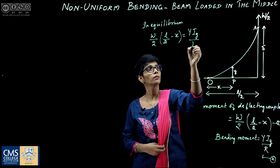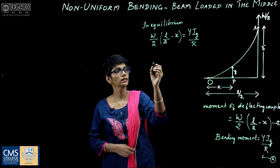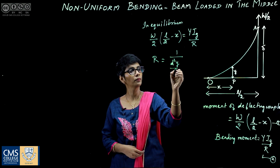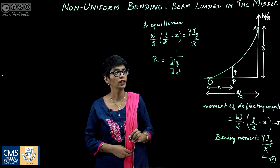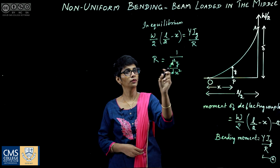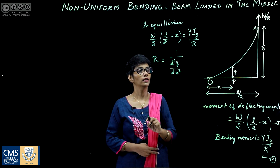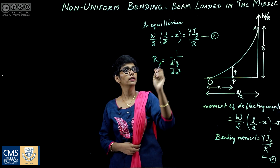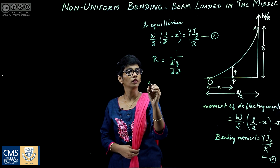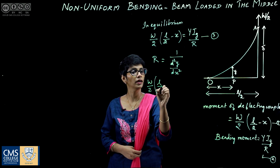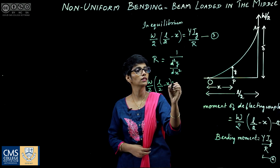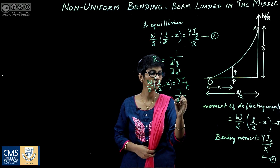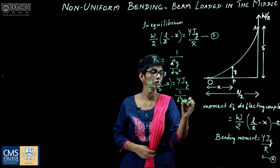We know that the radius of curvature R is equal to 1 / (d²Y/dX²). Since the elevation is very small, we can write R = 1 / (d²Y/dX²). Substituting into the equation, we get: W/2 × (L/2 − X) = Y·I_G × (d²Y/dX²).